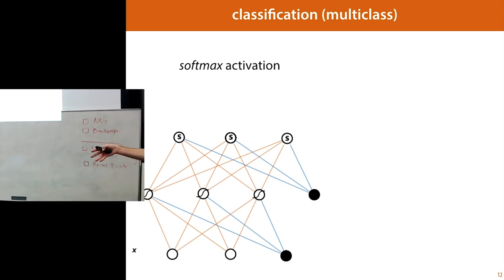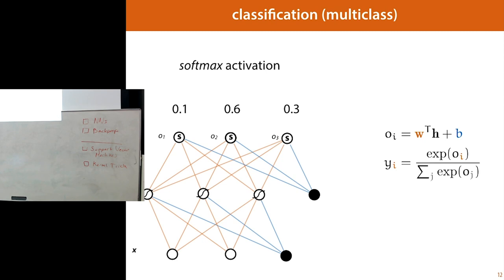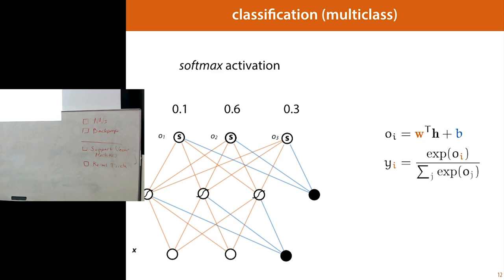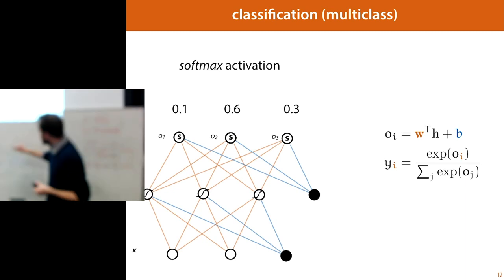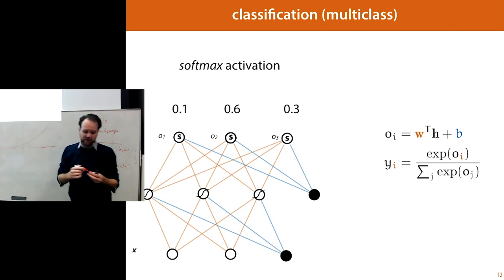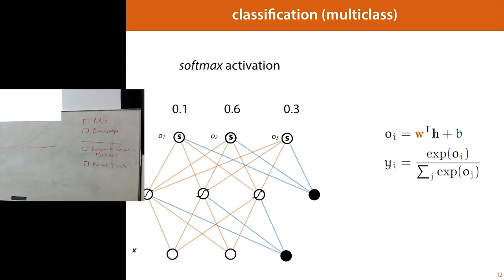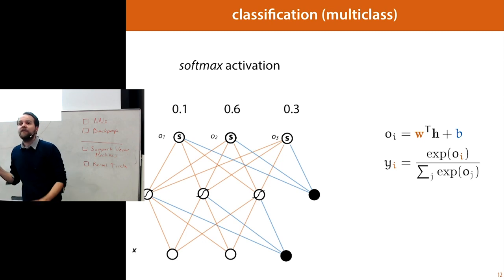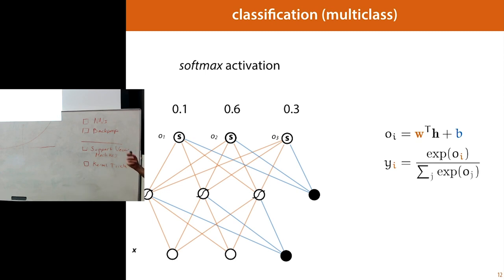Before the activation, the values are between minus infinity and positive infinity. We take their exponential — which makes them positive — and then normalize by dividing each by the sum of all those values. The result after the softmax activation is a bunch of values we can interpret as class probabilities. That's how to do regression, binary classification, and multi-class classification with a neural network.